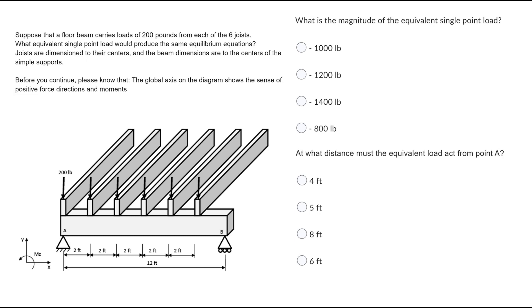We have this beam that has joists laid on top that are each carrying loads of 200 pounds. It's important to note here we're given a global axis already so we know what directions are positive here.